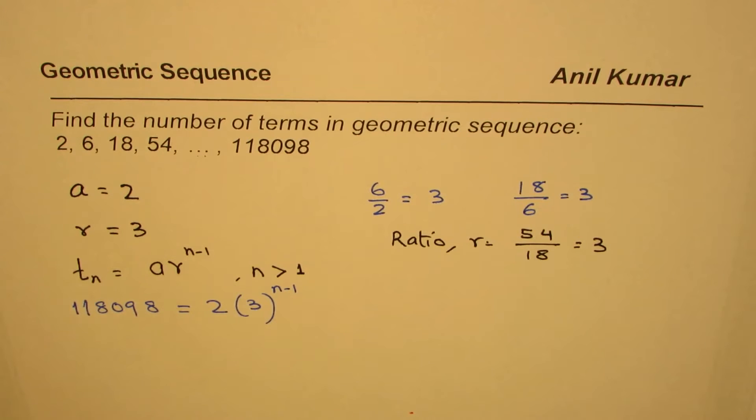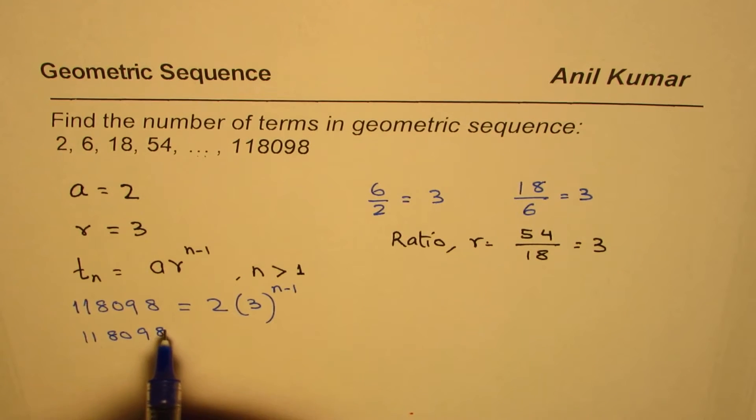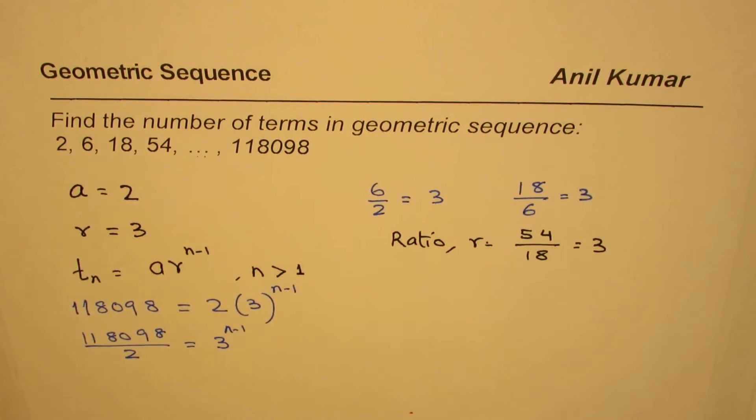So let's divide. We have 118098 divided by 2 equals to 3 to the power of n minus 1. So that is what you get. Now we'll see how to solve this.